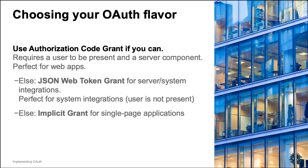ISVs should especially try to use the Authorization Code Grant flow if they can. To use it, you will need the user to be present when your application is used or configured. Your application will also need a secure server component to protect the integration key's secret. If you can't use the Authorization Code Grant flow, then often the JWT flow — that is, the JSON Web Token flow — is the next best one to use, especially for system integrations where the user is not present.